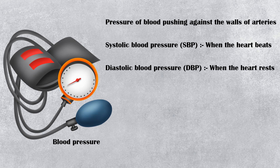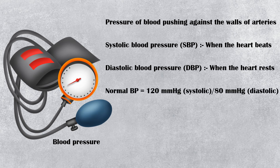Normal blood pressure is equal to 120 mmHg systolic over 80 mmHg diastolic. Low blood pressure, or hypotension, is defined as a blood pressure less than 90 systolic over 60 diastolic.